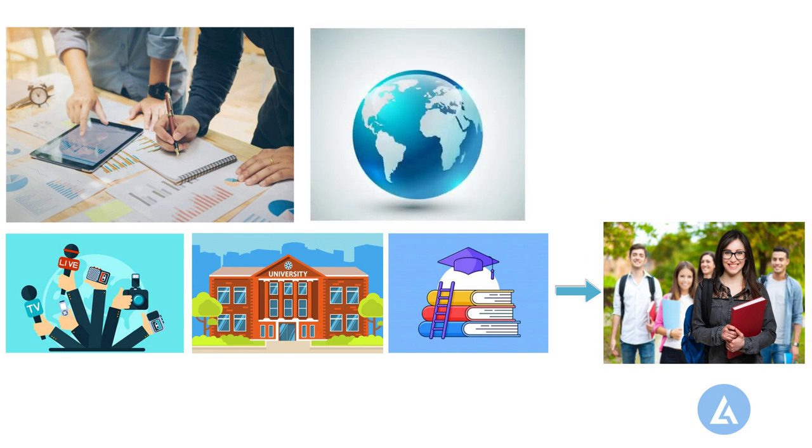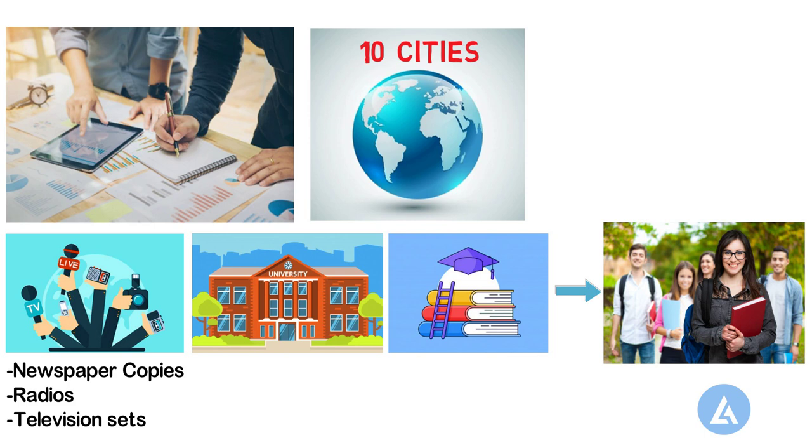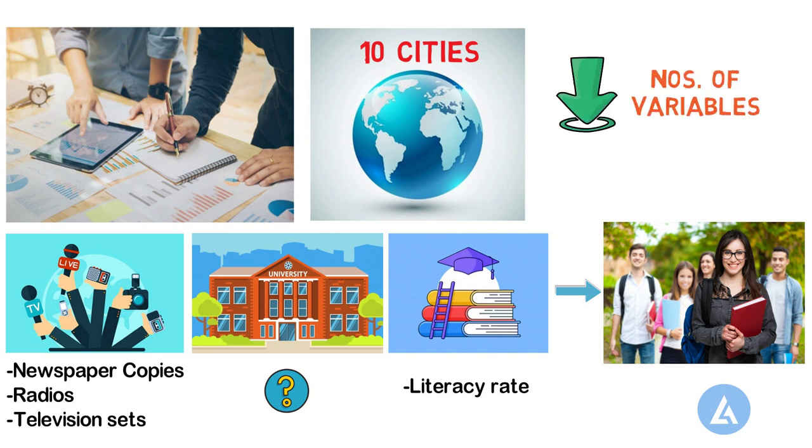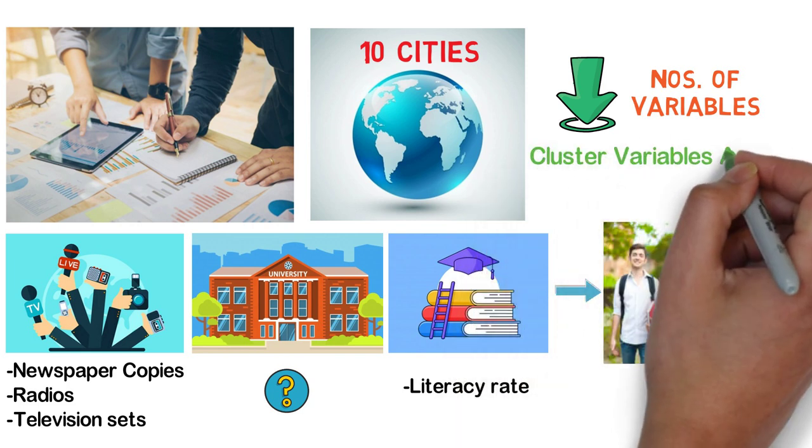For example, a social scientist wants to study the effects of the number of media outlets, universities, and the literacy rate on the college admissions of the population. For 10 cities around the world, the scientist determines the number of newspaper copies, radios, and television sets per 1,000 people. The scientist also records the literacy rate and whether a university is in each city. The scientist wants to reduce the total number of variables by combining variables with similar characteristics. Therefore, a scientist uses the cluster variables analysis.